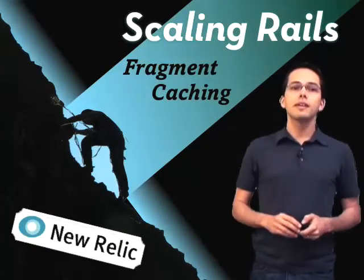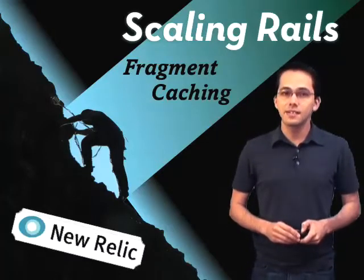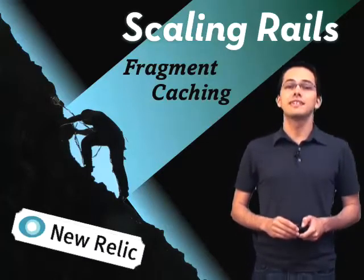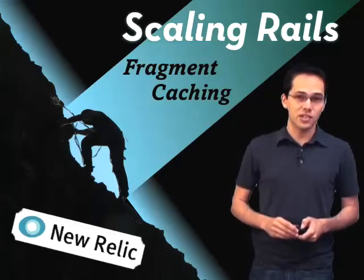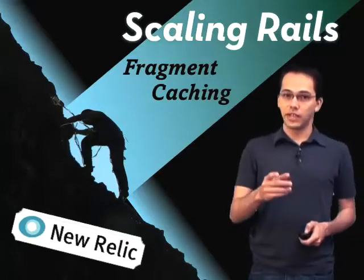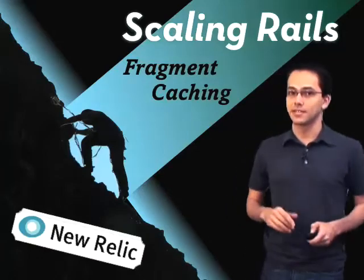With New Relic RPM, you can see missing database indexes, poorly performing SQL queries, and trace every slow transaction in your production Rails app. So if you haven't checked out RPM yet, now's the time.